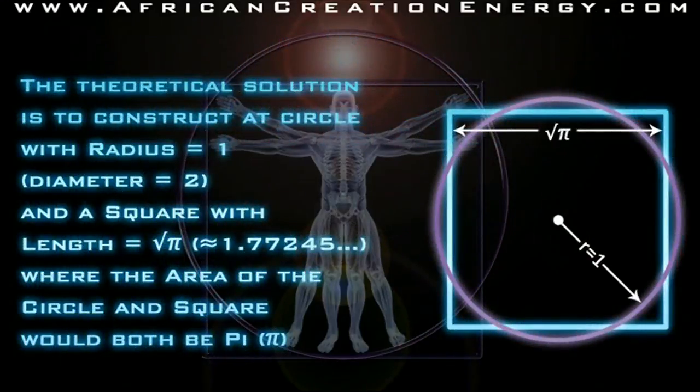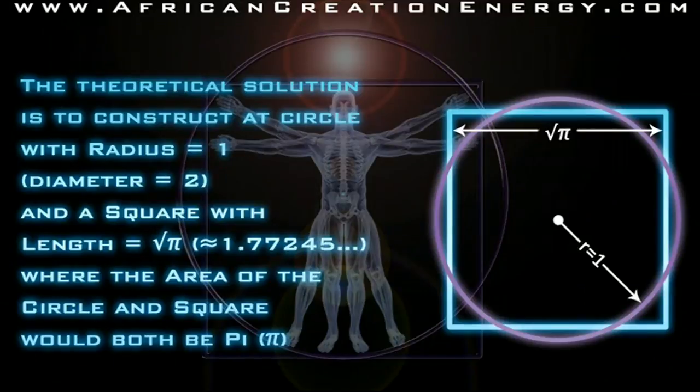The theoretical solution to squaring the circle is to construct the circle with a radius of 1, which means it would have a diameter of 2, and a square with length of the square root of pi, which would be like 1.77245, where the area of the circle and the square would both be pi.